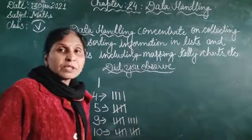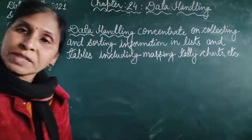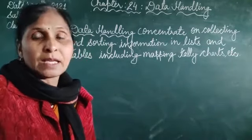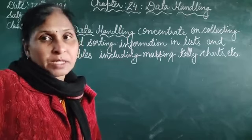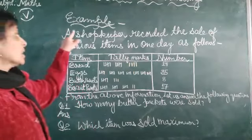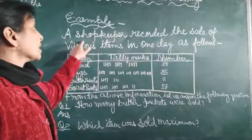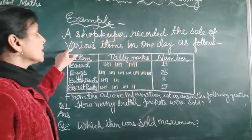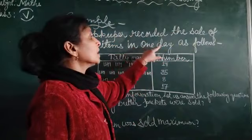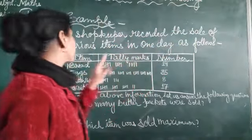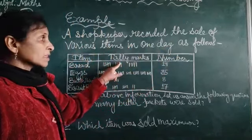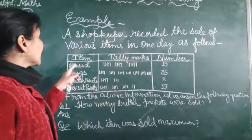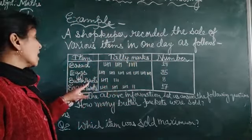In this way, we get with the tally marks. Now students, it is clear, how we read the tally marks and how we draw the tally marks, if the information are given. Now, this is the example, that is a shopkeeper recorded the sale of various items in one day as follows. Item, tally marks and here is number. These are the information given here. That is, item is bread, eggs, butter packets,